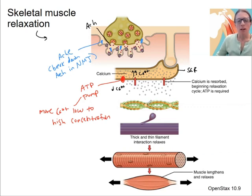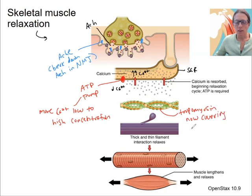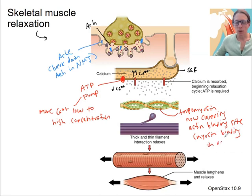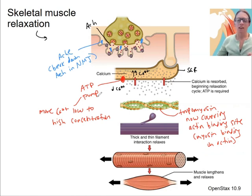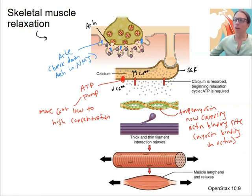Moving calcium out of the way means tropomyosin now covers the myosin binding site on actin. When actin and myosin release from each other, the thick and thin filaments slide back to rest. This causes a lengthening of all the sarcomeres, and the muscle lengthens as it relaxes.